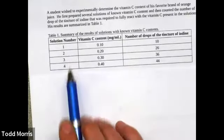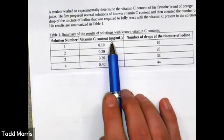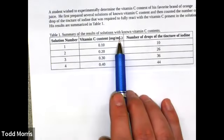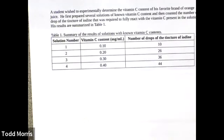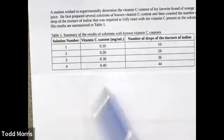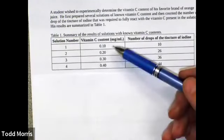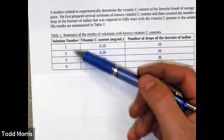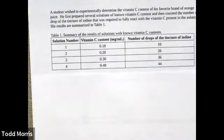He prepared four solutions paired with known vitamin C contents in units of milligrams of vitamin C per milliliter of solution, and then determined how many drops of tincture of iodine were required in each case. From this raw data, we can see a proportional relationship: as the vitamin C content increased going from solutions one up to four, the number of drops of tincture of iodine also increased.